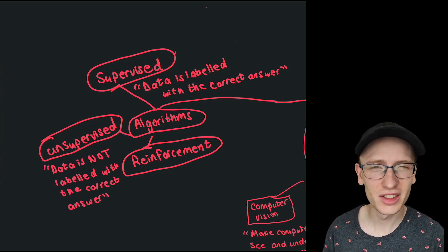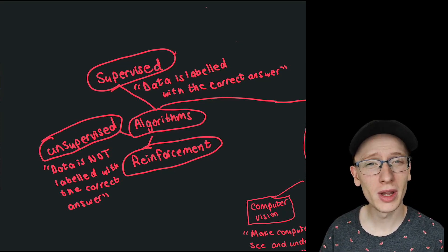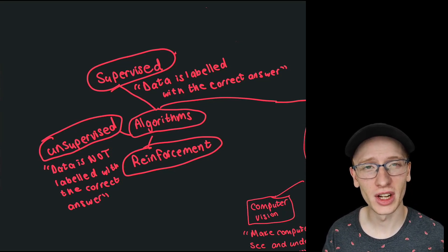Reinforcement learning is kind of weird, and it's kind of supervised, it's kind of unsupervised. Mainly the idea behind it is that we are learning from trial and error.